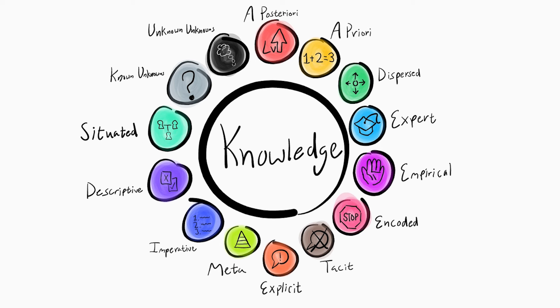Known unknowns. This is the awareness of something that we don't know. So understanding there is knowledge there and that we don't have it yet. For example, when you started the video, you may have not known that there were different types of knowledge at all. So that curiosity led you to a known unknown.